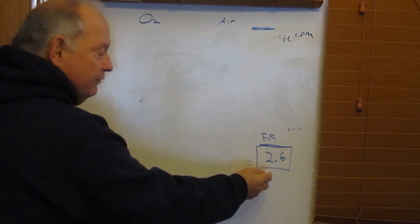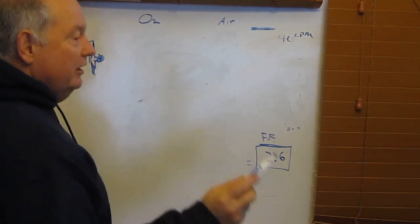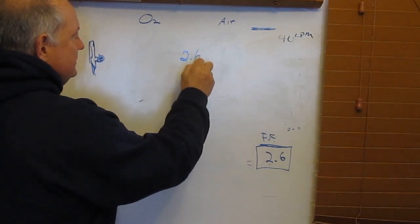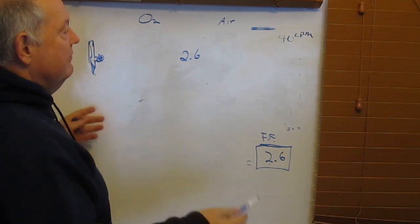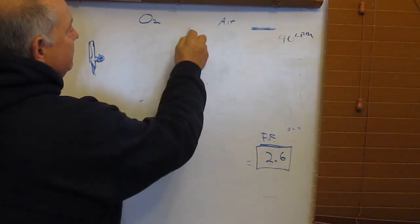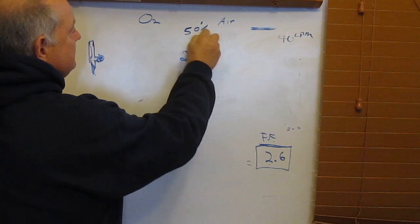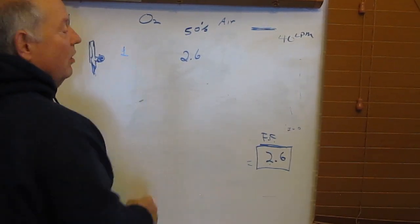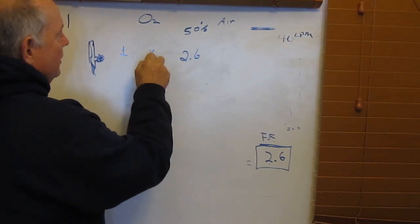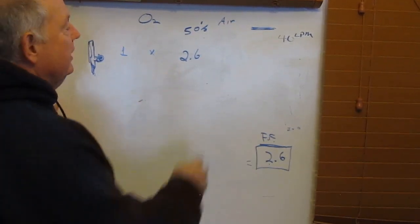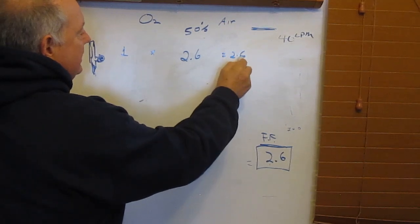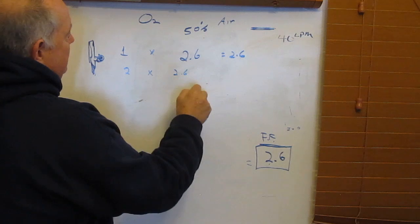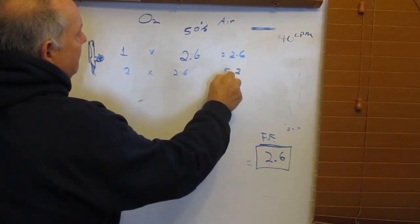Now you have your flow factor. So 2.6 times whatever we set it on will give the total flow for a 50% aerosol. Alright. So we set oxygen to 1, what are we going to get? 1 liter times 2.6, we'll get 2.6. 2 liters times 2.6 should be something like 5.12.